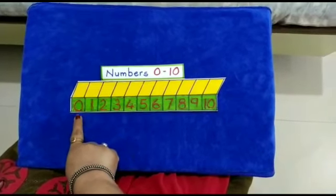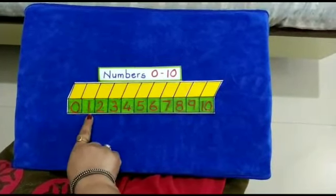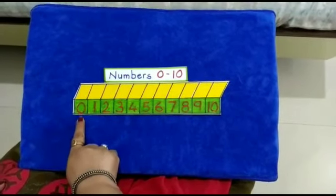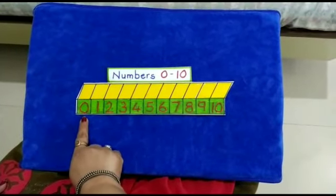Kids, I hope through this video you have understood the value of number 0. Now we will revise the position of number 0 in the number line. Number 0 is written before number 1. So let us revise numbers once again, 0 to 10.